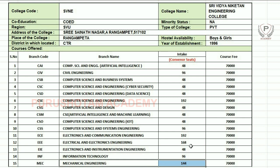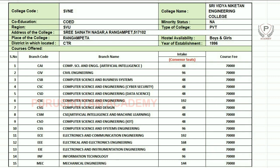So, those are the branch-wise available seats. Coming to college fees, the fee is 70,000. Friends, I have given you the details. In case of any doubt, please comment in the comment section below and I will try to help you. Thank you, thanks for watching this video.